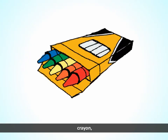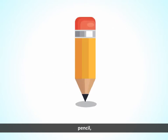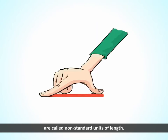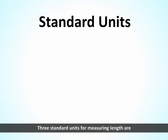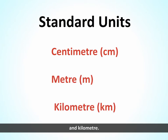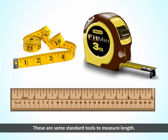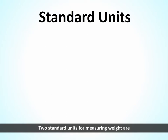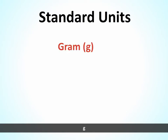Objects such as a razor, crayon, paper clip, pencil, handspan, etc. are called non-standard units of length. Three standard units for measuring length are centimeter (cm), meter (m), and kilometer (km). These are some standard tools to measure length. Two standard units for measuring weight are gram (g) and kilogram (kg).